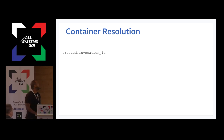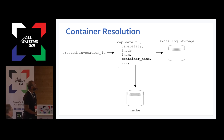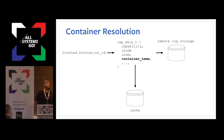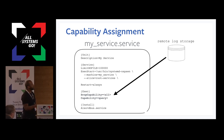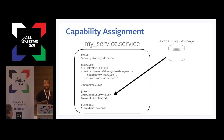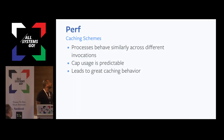So what can we do with this metadata? One thing we're doing at Facebook is leveraging it to build automated capability management systems. We take that data, cache it locally for performance reasons, send it to remote storage, and then on some subsequent invocation of the container, we pull from remote storage and put those capabilities inside the spec, and then drop all other capabilities.